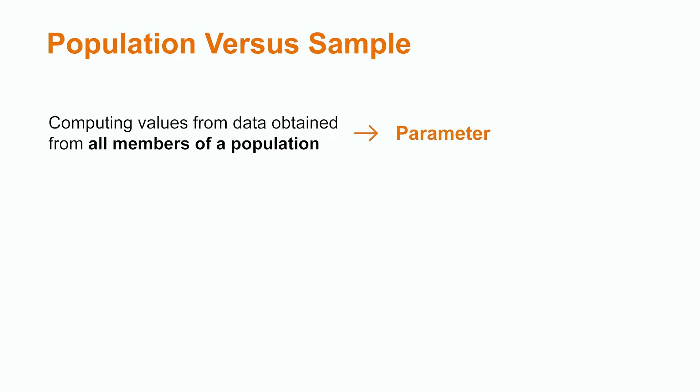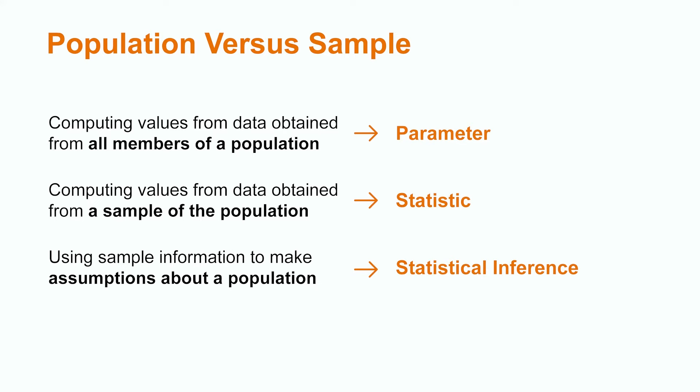When we compute values, such as the mean from data obtained from all members of a population, this is called a parameter. When we gather this information using only a sample of the population, it is called a statistic. When we use sample information to make assumptions about a population, this is called statistical inference.